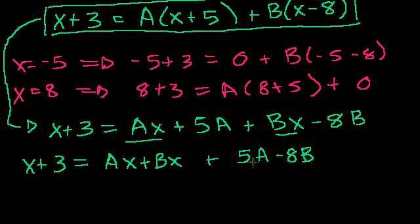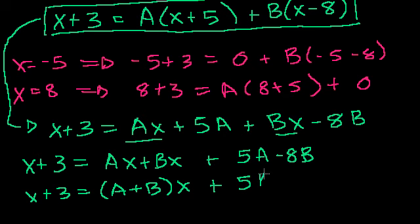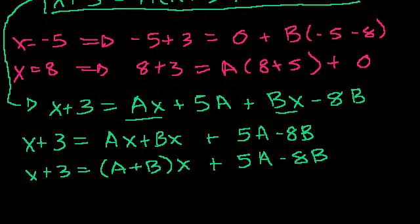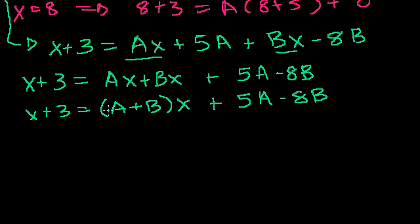Notice I just grouped the x terms and I grouped the constant terms. Then you could say x plus 3 equals, we can factor out an x here, a plus b times x plus 5a minus 8b.